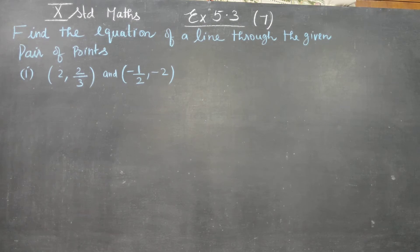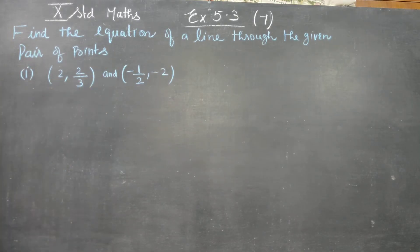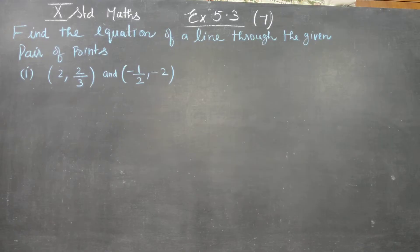Dear 10th standard students, in coordinate geometry, axis number 5.3, sum number 7: find the equation of a line through the given pair of points. The two points are (2, 2/3) and (-1/2, -2).